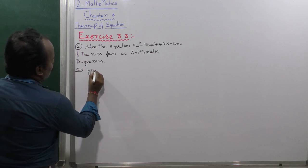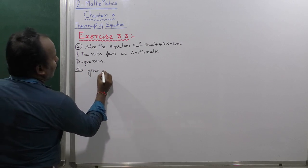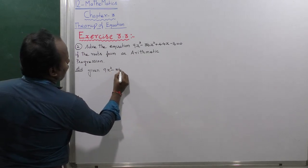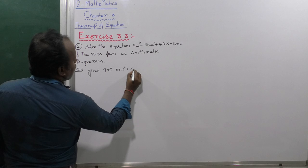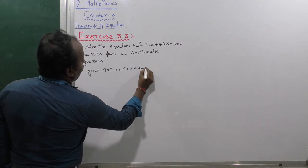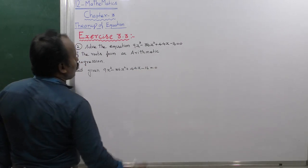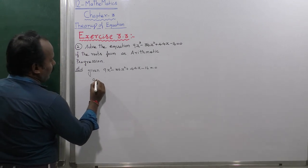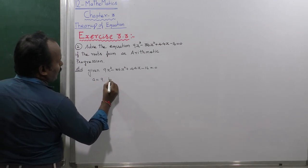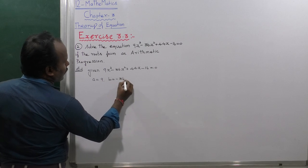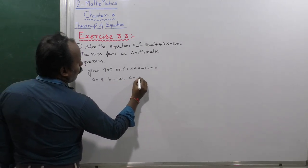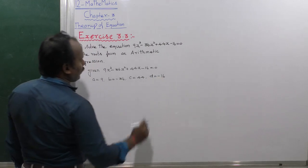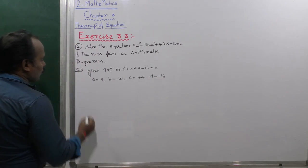Given equation: 9x³ minus 36x² plus 44x minus 16 equals 0. Here, a is equal to 9, b is equal to minus 36, c is equal to 44, and d is equal to minus 16.